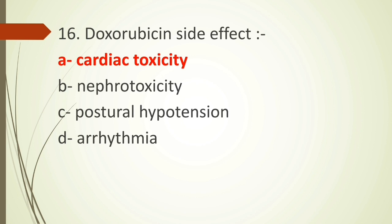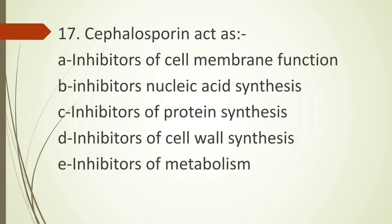Sixteenth question: doxorubicin has a side effect of — option A cardiac toxicity, option B nephrotoxicity, option C postural hypotension, option D arrhythmia. Doxorubicin and daunorubicin are both anti-cancer drugs and their major side effect is cardiac toxicity. The correct answer is option A, cardiac toxicity.